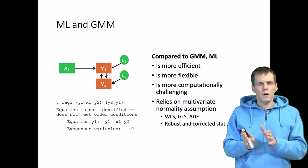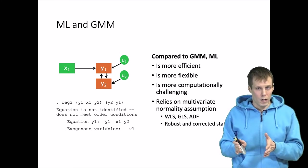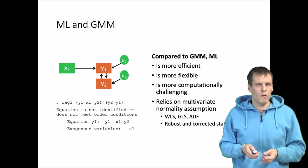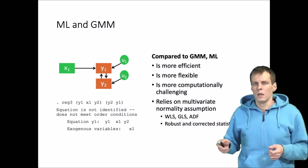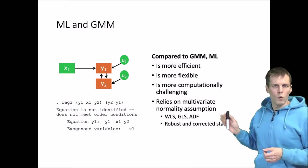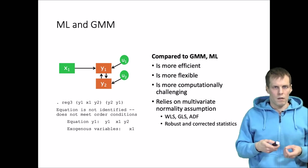Of course, constraining two quantities that we don't know, the unknown causes, to be uncorrelated is a rather strong assumption that should be justified based on theory, but it is possible to do. Maximum likelihood estimation is more computationally challenging.